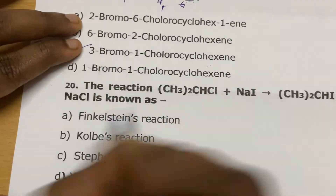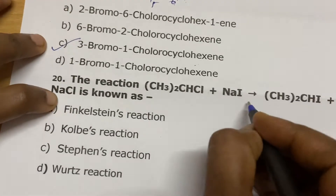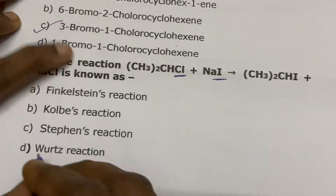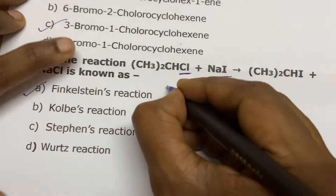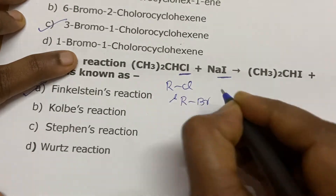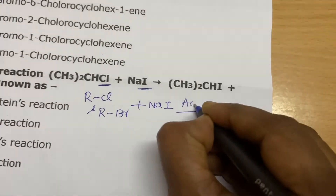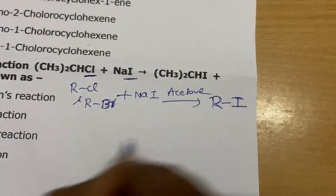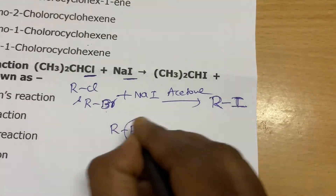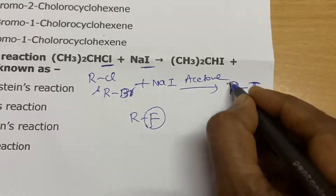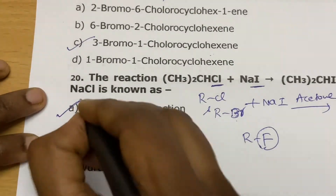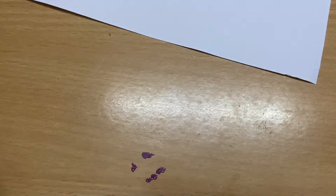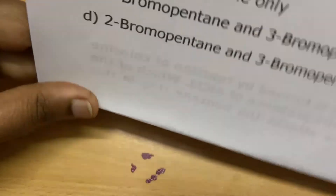This reaction involves isopropyl chloride reacting with sodium iodide — chlorine is replaced with iodine. This is known as the Finkelstein reaction. If an RCl or RBr reacts with sodium iodide in acetone as solvent, the product simply replaces chlorine or bromine with iodine. The reaction does not take place with fluorine — only chloro and bromo derivatives get converted to iodo derivatives. This is very useful for many mechanisms whenever you want to replace bromine with iodine.